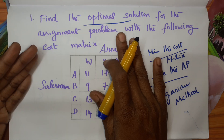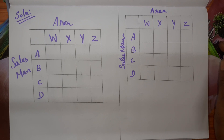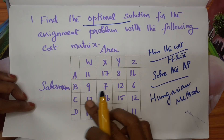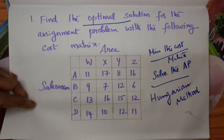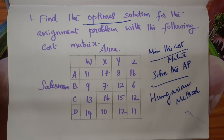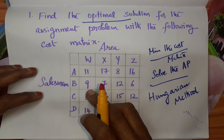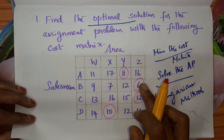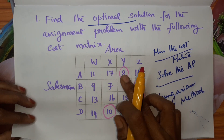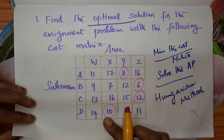Step 1 is to check whether the given AP is balanced. The next step: in every row, we have to locate the least element, and subtract that least element from all the other corresponding entries in the row. In the first row, 8 is the least element. In the second row, 6 is the least element. In the third row, 12. And in the last row, 10 is the least element.